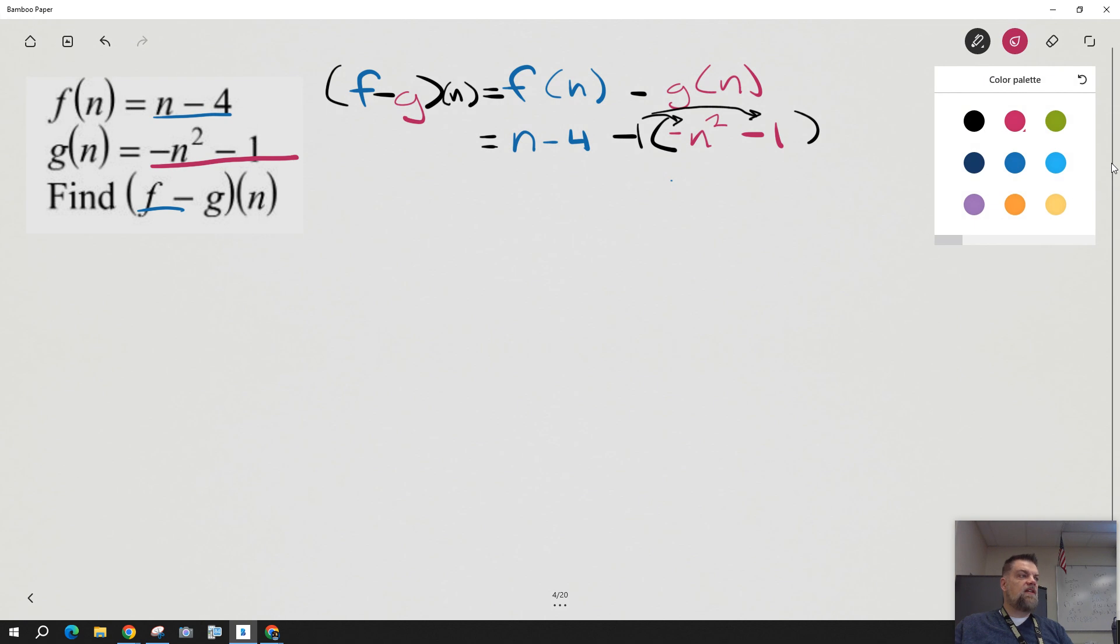So on the next line, negative 1 times negative n squared is just a positive n squared. And then negative 1 times negative 1 is just a positive 1. All this other stuff on the other side really hasn't changed. So we just write that down.